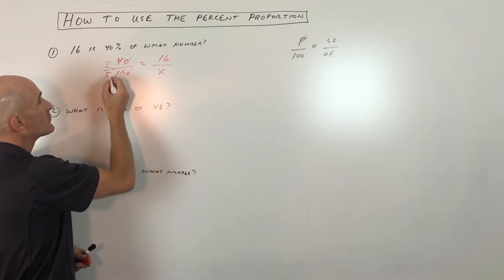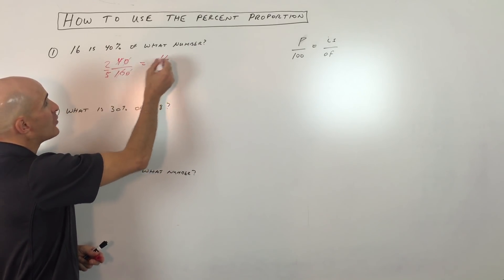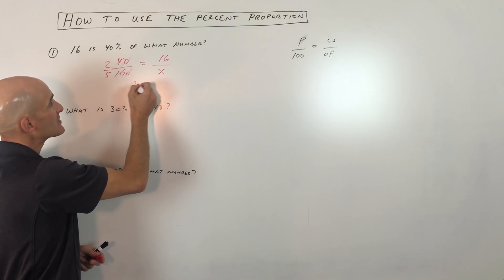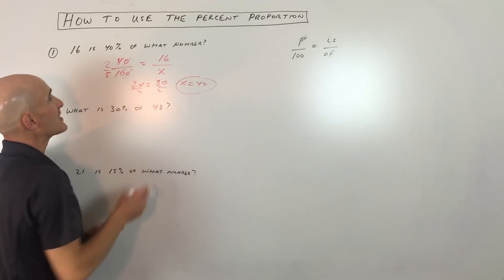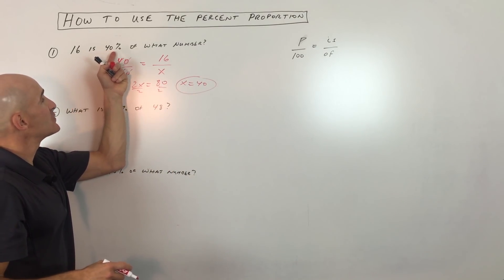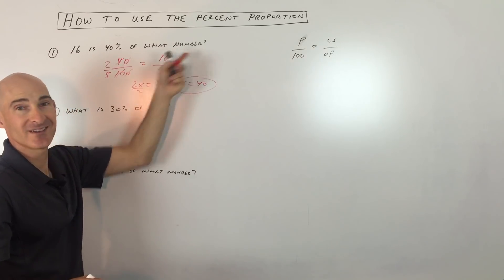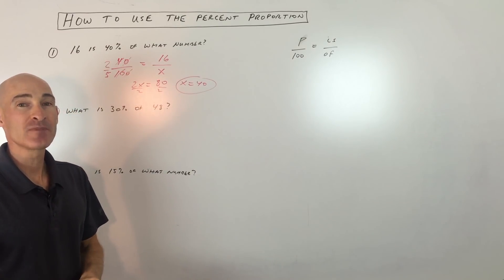So now we have 2-5ths equals 16 over X. I'm going to cross-multiply on the diagonal, so 2 times X is 2X. 5 times 16 is 80, and if we divide both sides by 2, you can see that X equals 40. So that's the answer to this question. 16 is actually 40% of 40.